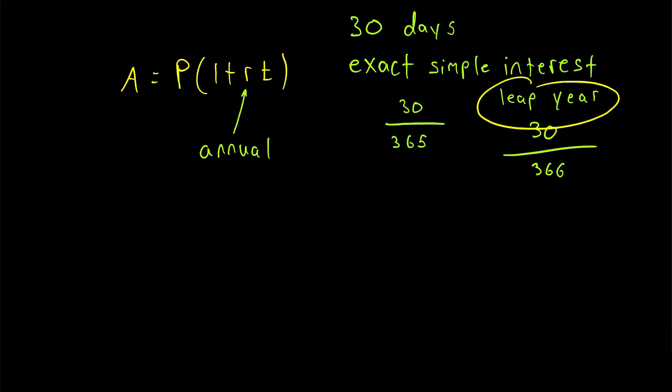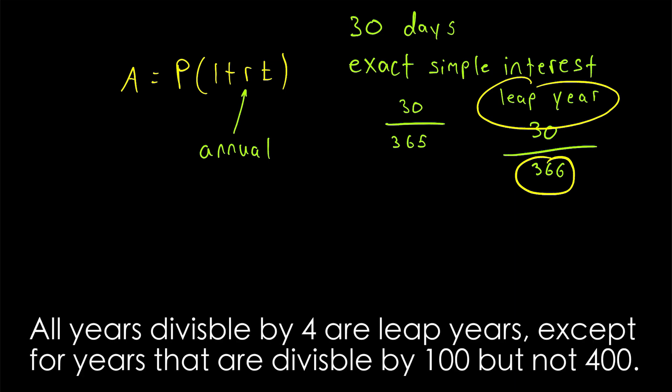a year is a leap year, and thus has 366 days, if it is a multiple of 4 and it is not a multiple of 100 that's also not divisible by 400.